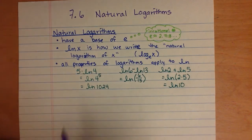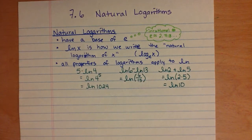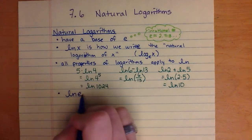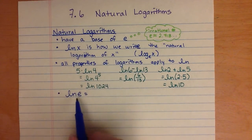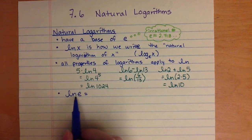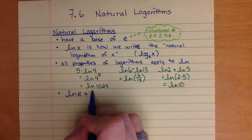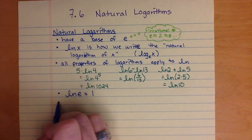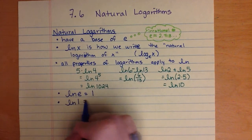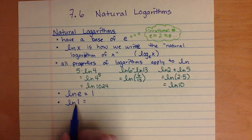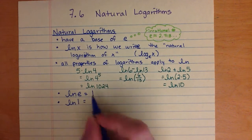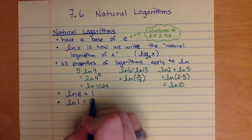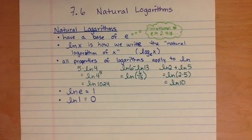A couple of special properties to be aware of for natural logarithms: the natural log of e equals 1, because e to the first power gives e. Also, the natural log of 1 equals 0, because any base to the power of 0 equals 1.